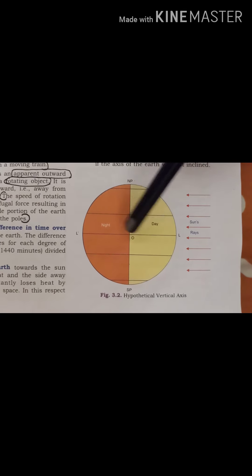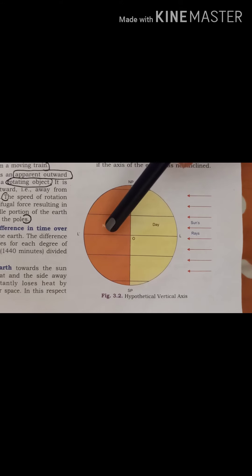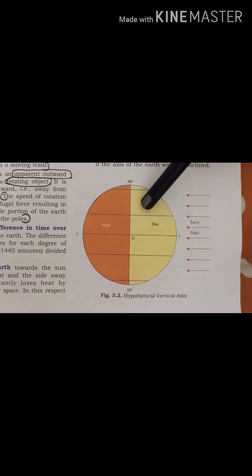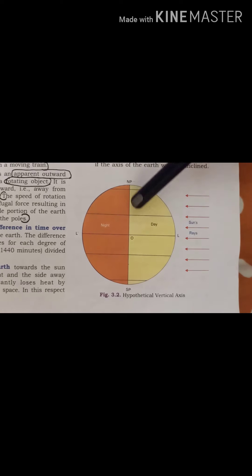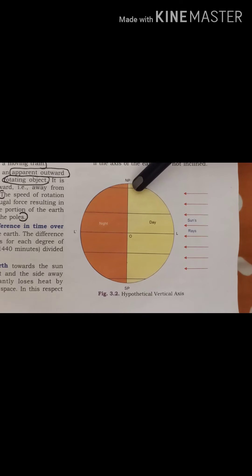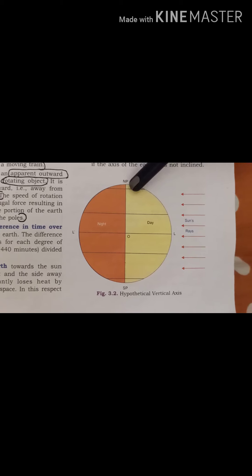The length of the day and the length of the night would be same. It would be the same in all places if you see. If the earth's axis was straight and not tilted the length of the day and night would be equal all over the earth.